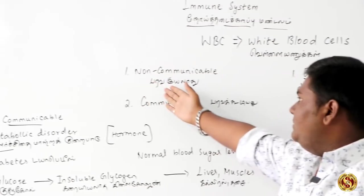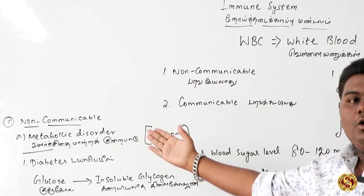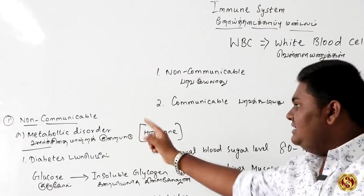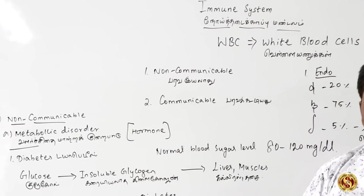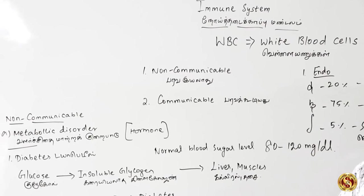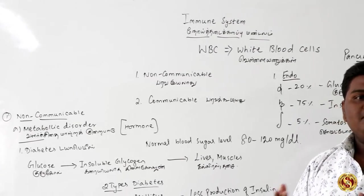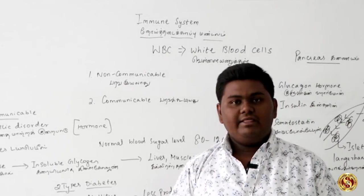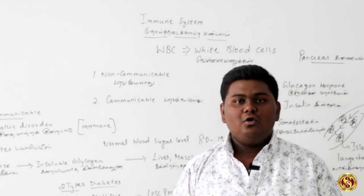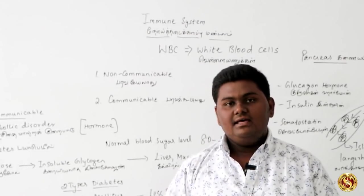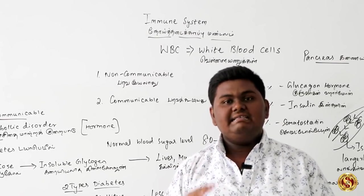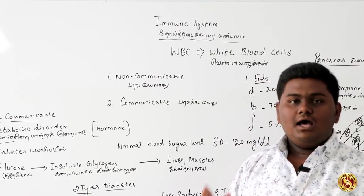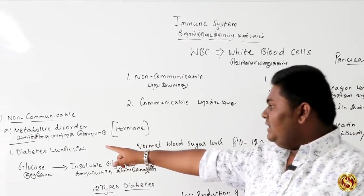Non-communicable diseases include three or four types. First is metabolic disorder, which involves hormones. For example, if there are hormonal issues, there is thyroid disease. Thyroid is related to adrenocorticotrophic hormone and kidney hormones. One disorder that arises from this is Cushing's disorder. One example of a metabolic disorder is diabetes.